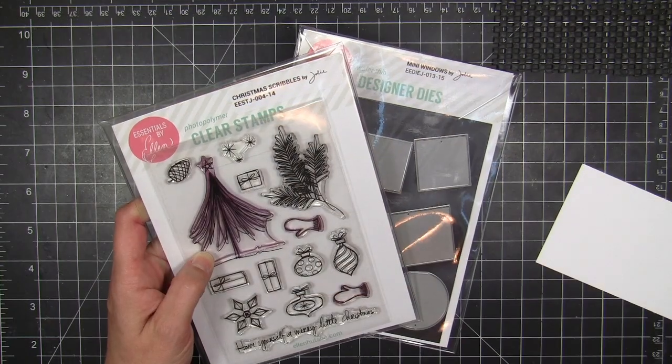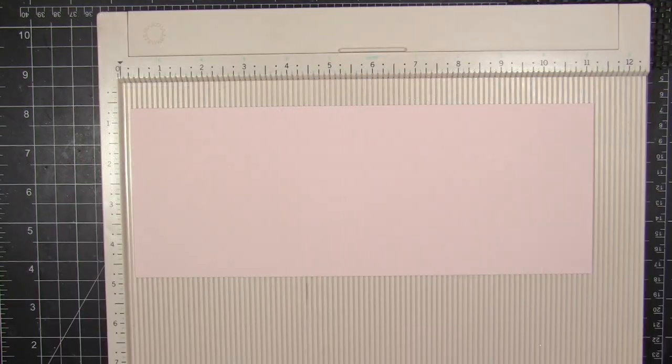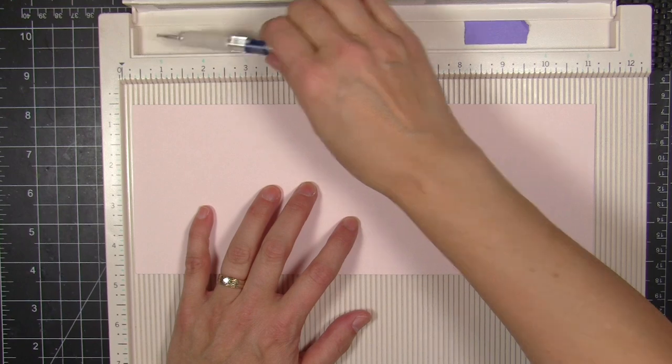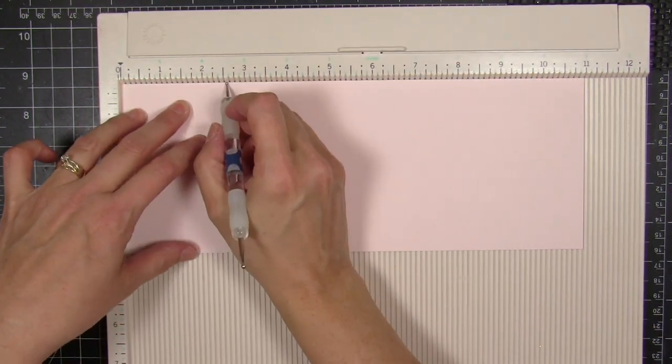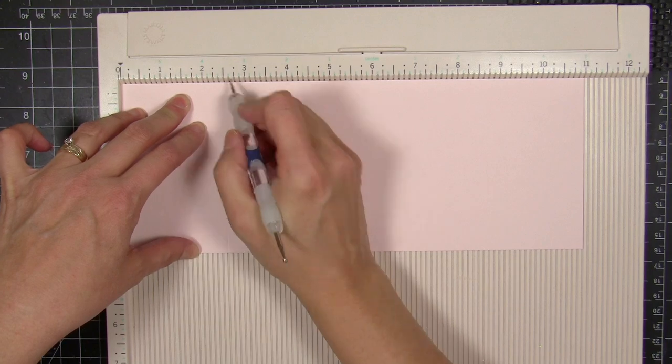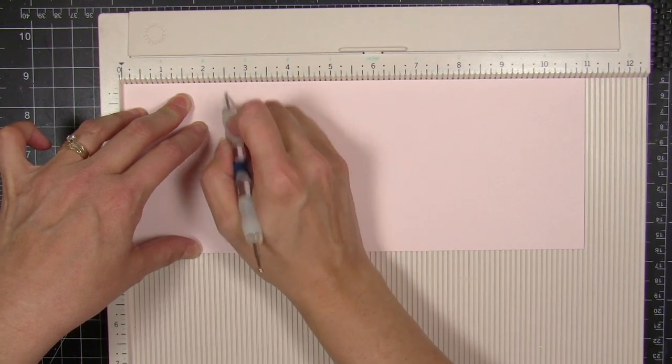And I'm going to be working with the mini windows dies. This is something I used to do by hand and use a template, and it's a lot less complicated and goes a lot faster now that you can use these mini window dies to create the same effect.